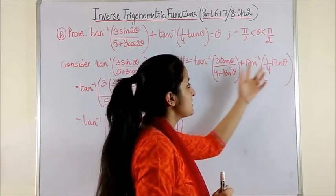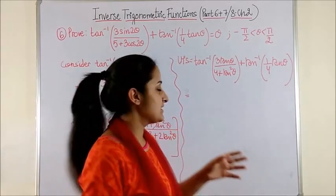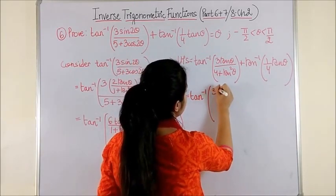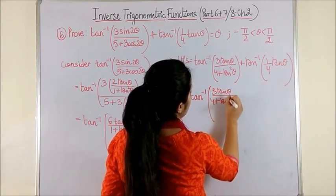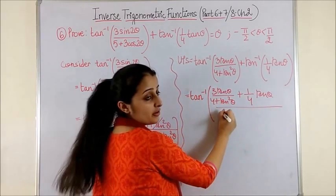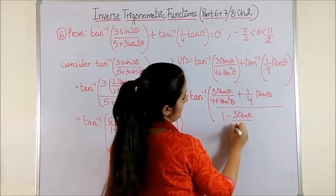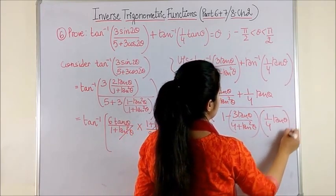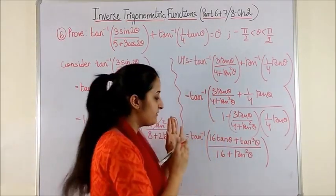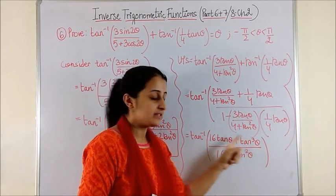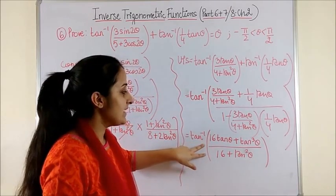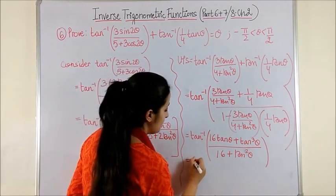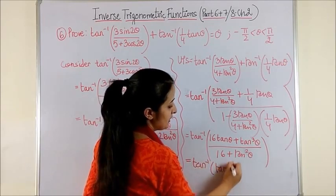Now let's use the formula tan⁻¹x + tan⁻¹y, working on the assumption that xy < 1. Making use of the formula, this is tan⁻¹[(x + y)/(1 − xy)]. After taking the LCM and simplifying, you get tan⁻¹[(16tan θ + tan³θ)/(16 + tan²θ)]. Taking tan θ common from the numerator, the numerator and denominator share a common term, and you end up getting tan⁻¹(tan θ), which is just θ.